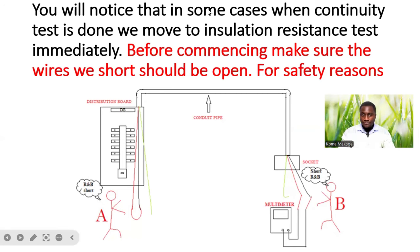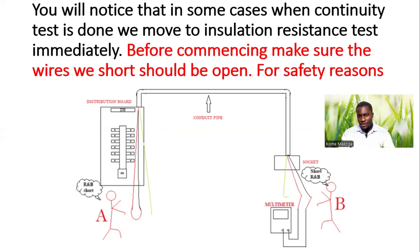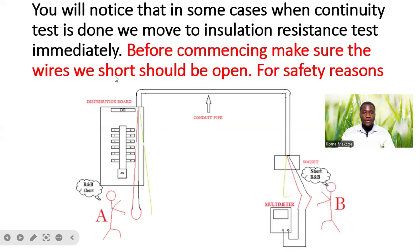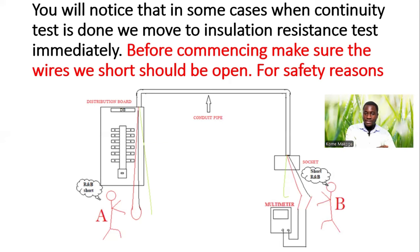In some cases when continuity test is done, we move to insulation resistance test immediately. Before commencing the mega test, make sure the wires that were shorted are now open. Because while carrying out continuity test, we have to short one end and then test the other. If we are going straight to perform insulation resistance tests, we have to ensure that we open the end that was shorted previously while carrying out continuity test.